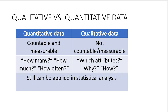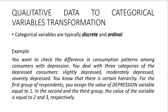Quantitative data typically provides answers to questions such as how many, how much, and how often, while qualitative data are typically about questions like which attributes, why, and how. Although it might seem complicated to transform qualitative data to quantitative data, it is still possible and you can use those data in statistical analysis. Let's start with the first example: transforming qualitative data to categorical variables.